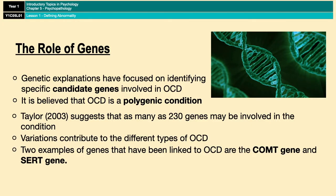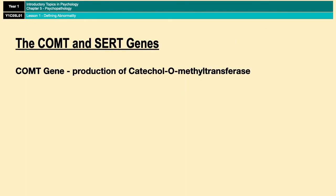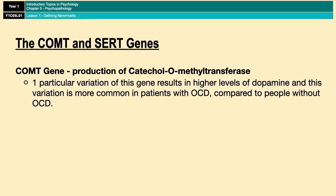There are two specific candidate genes we're going to look at: the COMT gene and the CERT gene. The COMT gene is involved in the production of catechol-o-methyltransferase, which regulates the production of dopamine, a neurotransmitter implicated in OCD. One particular variation of the COMT gene has been found to be more common in people with OCD than those without it, and this variation results in higher levels of dopamine in the brain.